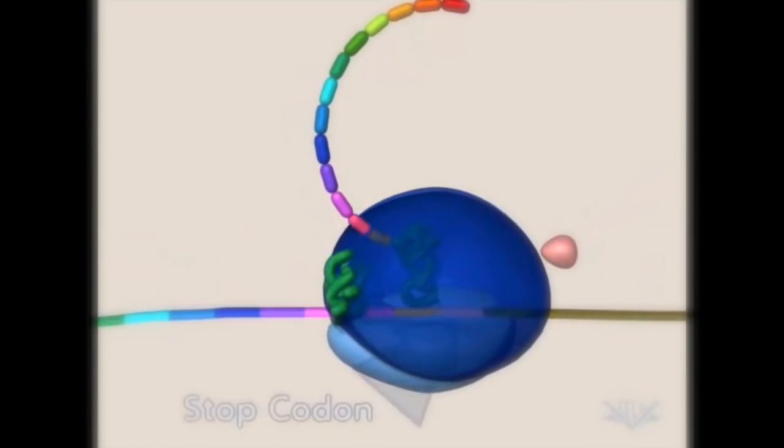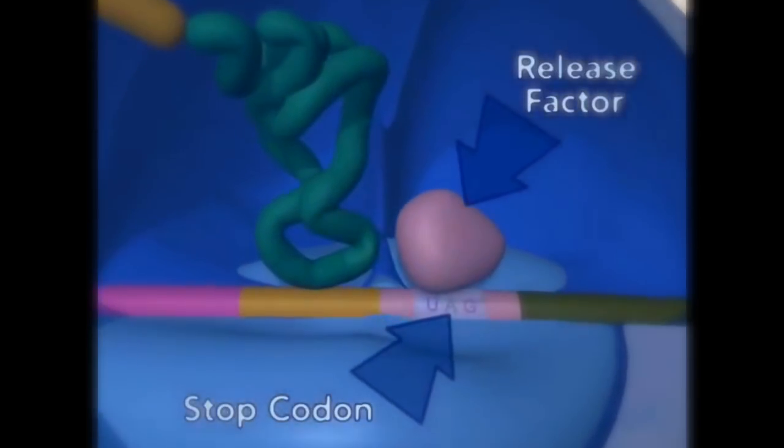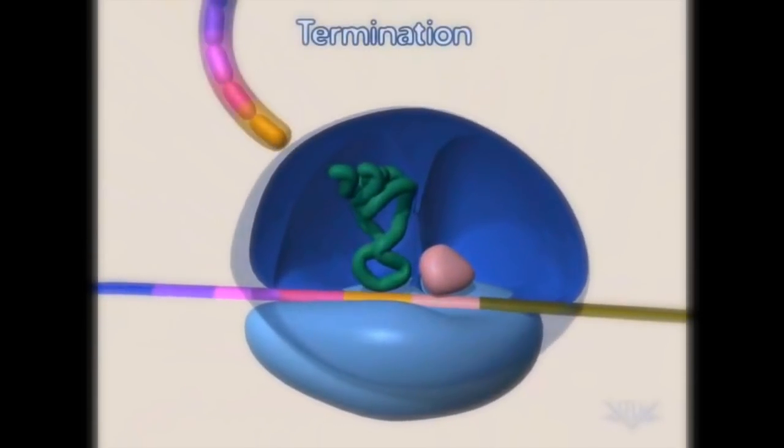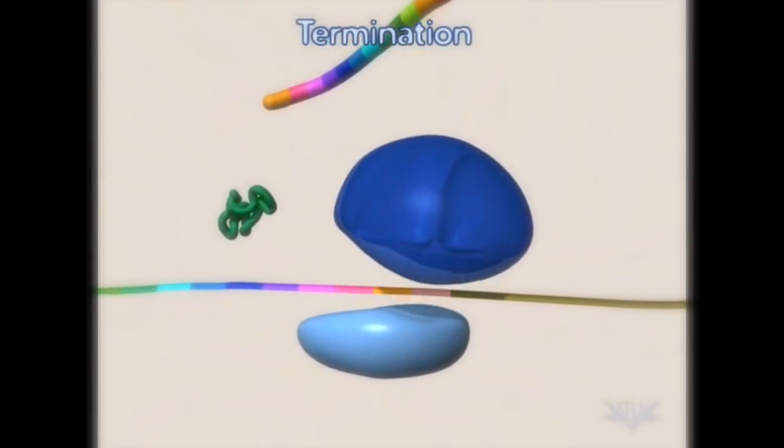When a stop codon is encountered in the A-site, a release factor enters the A-site and translation is terminated. When termination is reached, the ribosome dissociates and the newly formed protein is released.